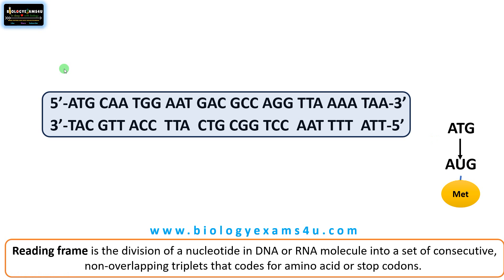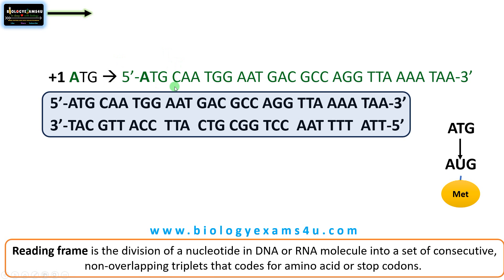Now let us find out the reading frames of this double-stranded DNA. Both strands are read in the 5' to 3' direction. There are three reading frames for each strand. If we select the first nucleotide, A, as the starting position, we can name it the plus 1 frame. The reading frame is ATG, CAA, GGG — consecutive triplets from ATG till TAA. This is the first reading frame for the sequence.